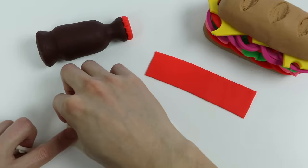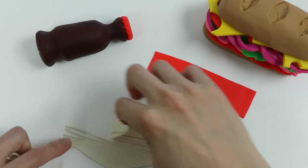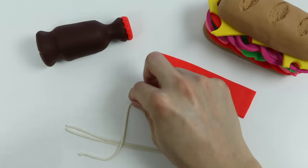We'll use a slicer to make really thin lines. Now we'll use these thin lines to spell out cola. Sit back and relax while I do this part.